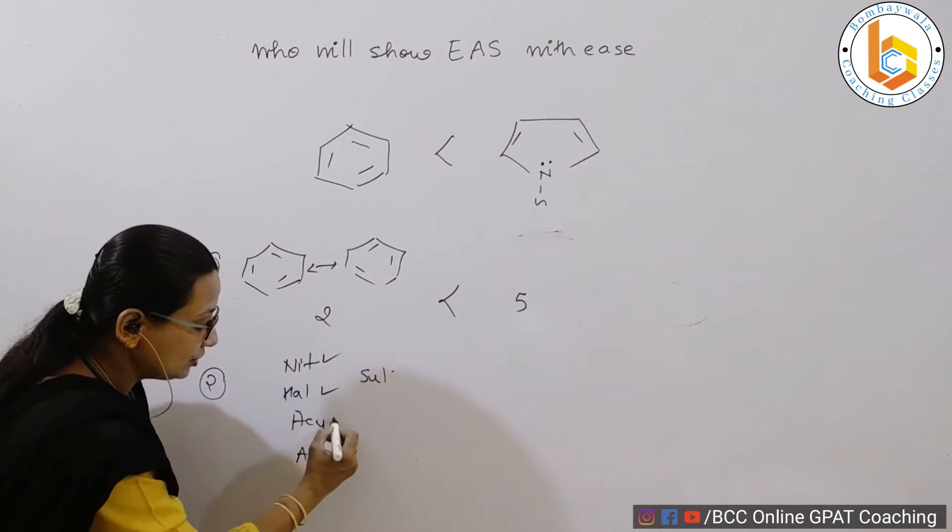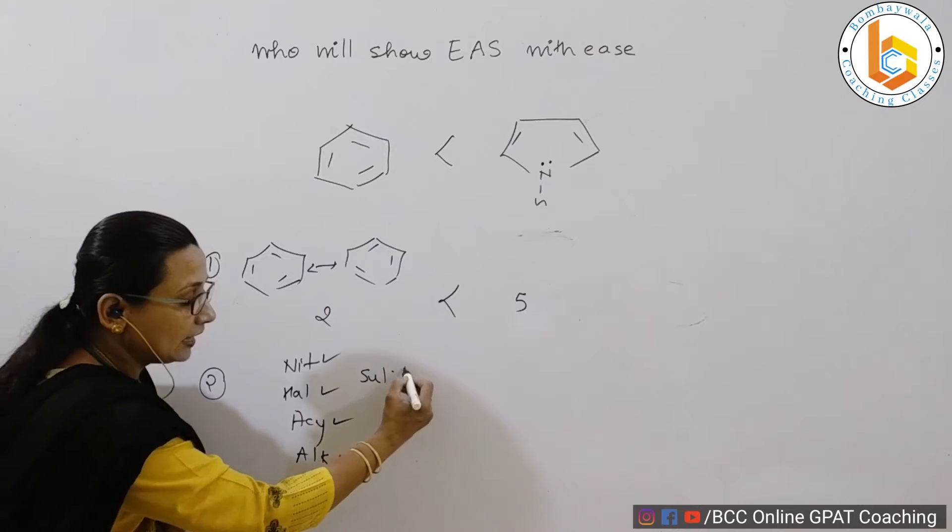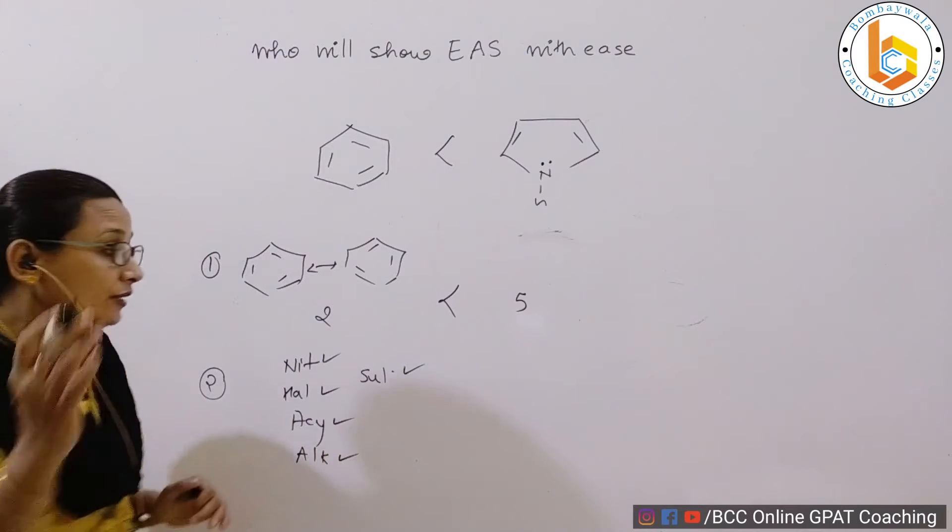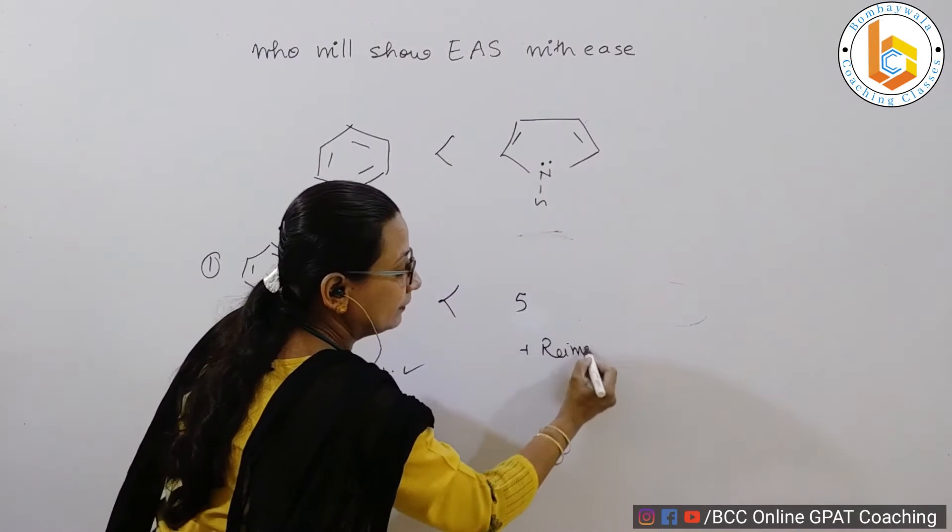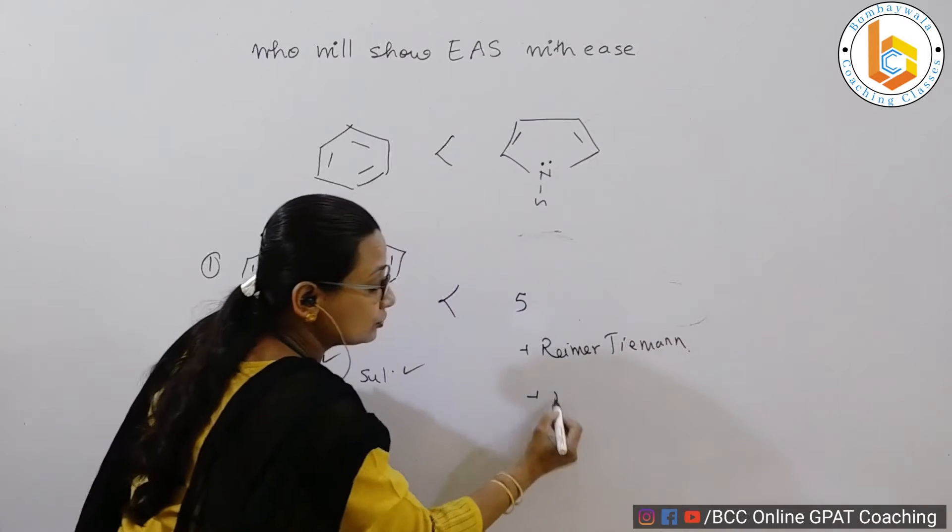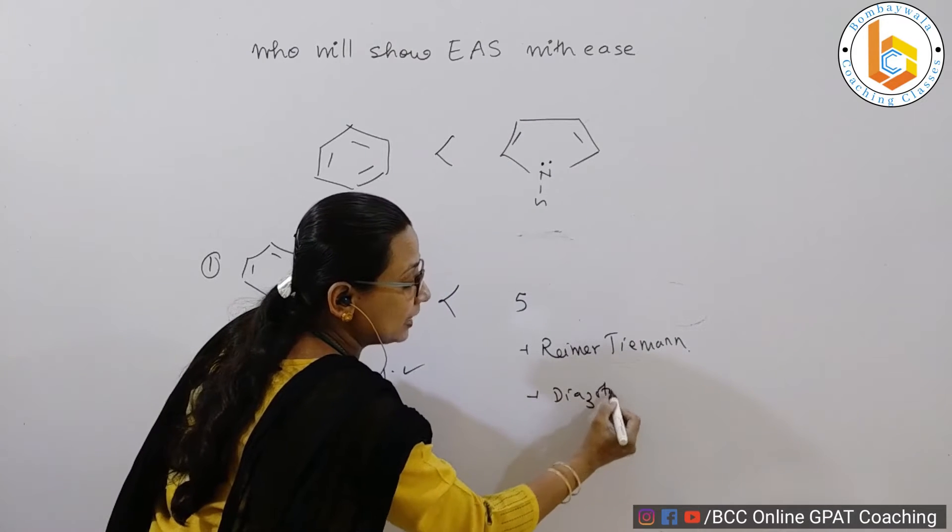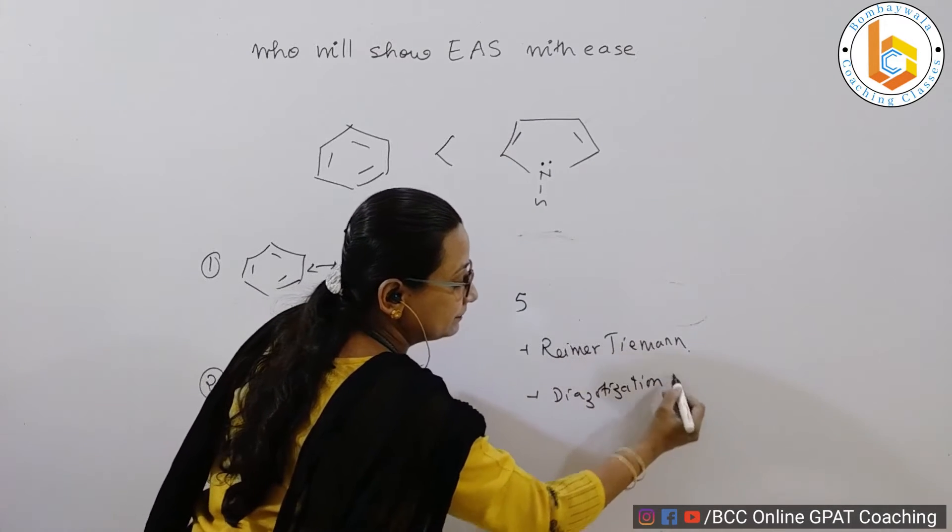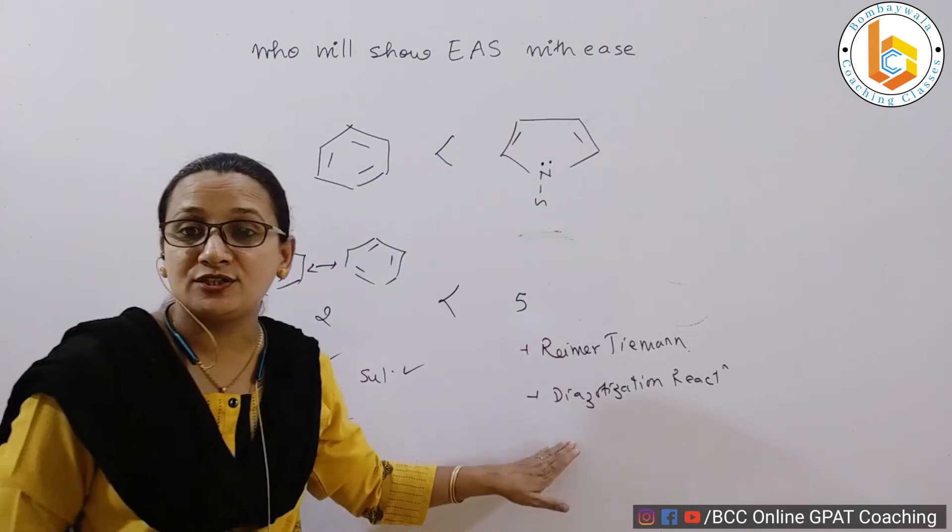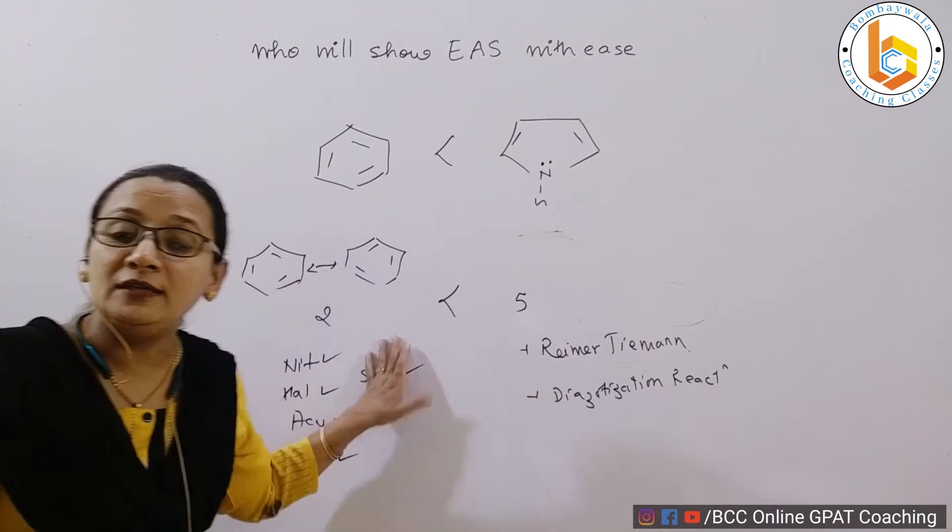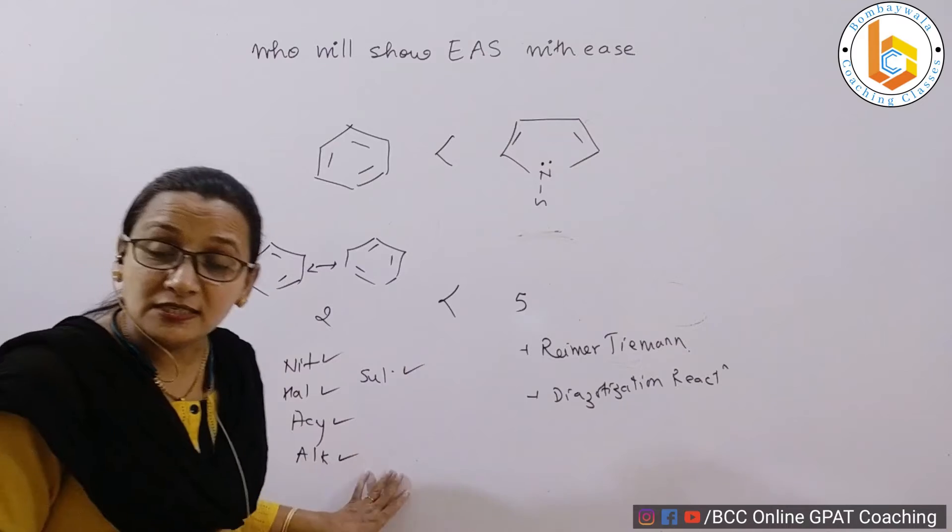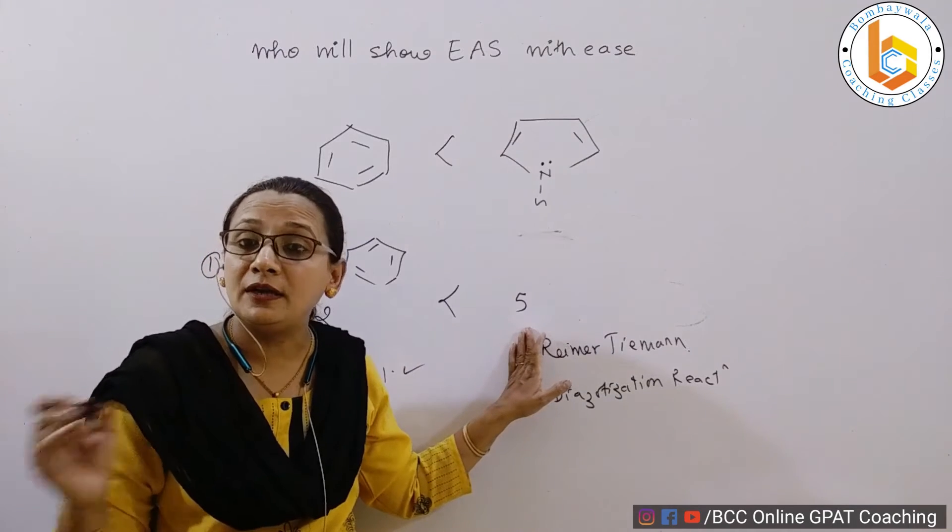So pyrrole also, in the next video we will be seeing that pyrrole also shows all these five reactions: nitration, halogenation, acylation, alkylation and sulfonation. But other than this they also show Reimer-Tiemann reaction and it also shows diazotization reaction. My dear students, benzene do not show these reactions.